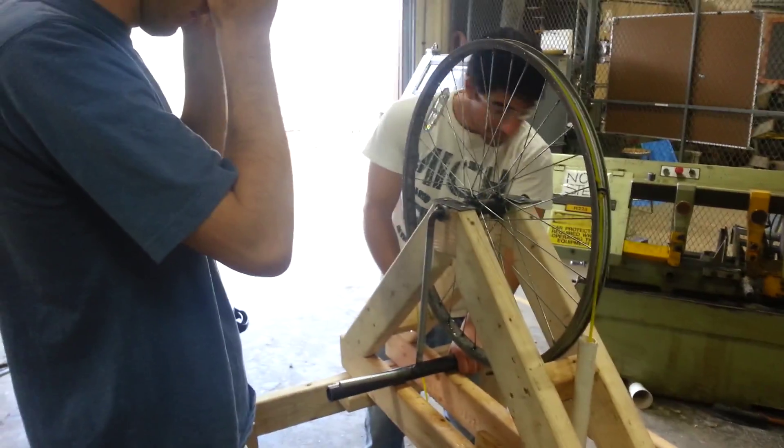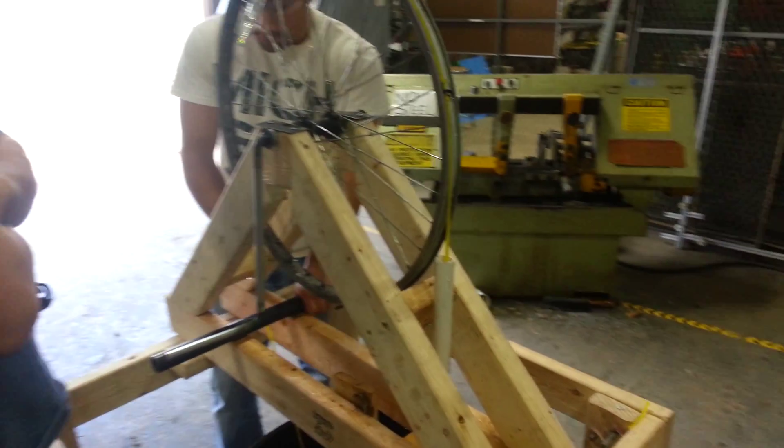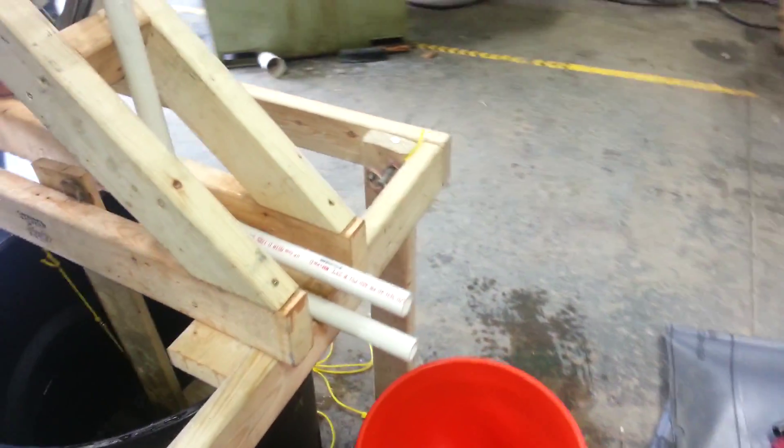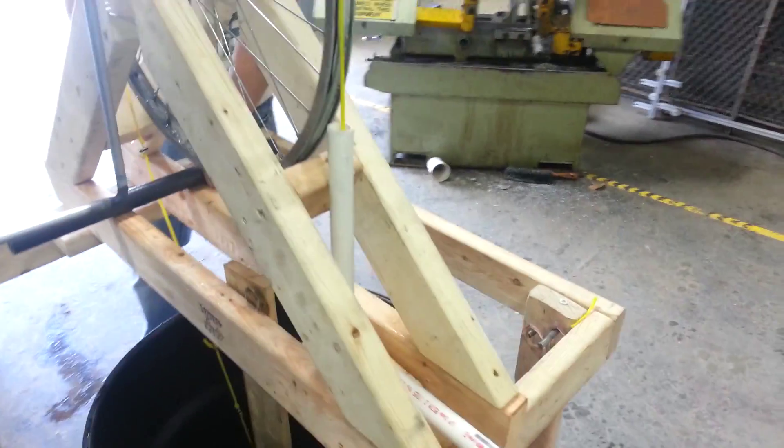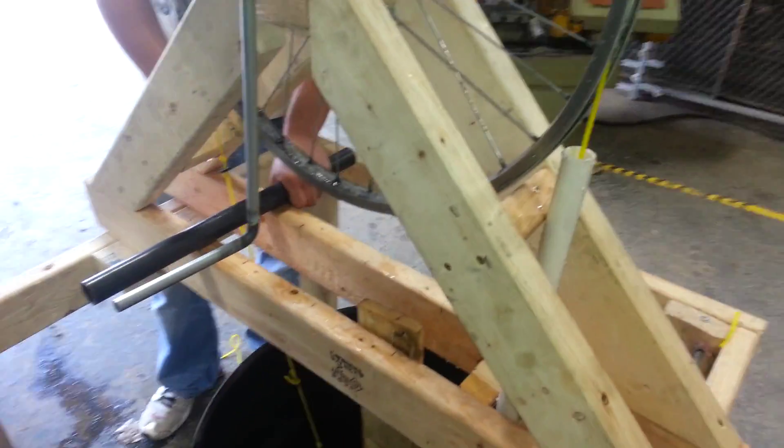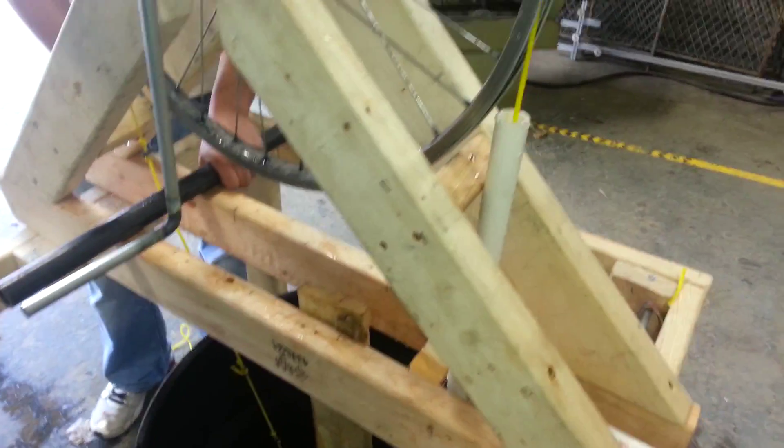So here is test number two of prototype 1.5. Everything is the same as the last test, double outspout, three-quarter inch PVC. We have our eight inch riser and what has changed is the seals.